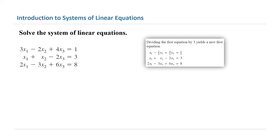So 3x1 divided by 3, negative 2x2 divided by 3, 4x3 divided by 3 equals 1 over 3. This becomes your very first equation. The second equation stays the same. The third equation stays the same.